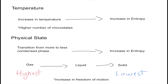The first factor is temperature. When we relate temperature to entropy, we get that an increase in temperature results in an increase in entropy. This is because an increase in temperature results in an increase of the kinetic energy and a higher number of microstates. And if you remember the definition of entropy by microstates, a higher number of microstates results in higher disorder, making it an increase in entropy.